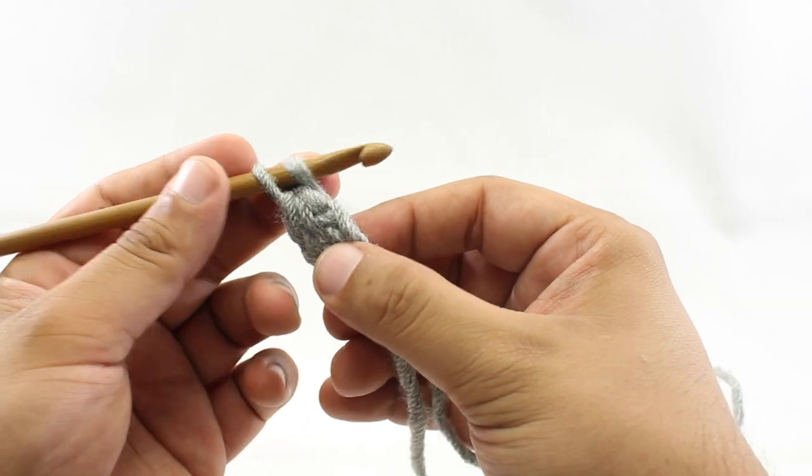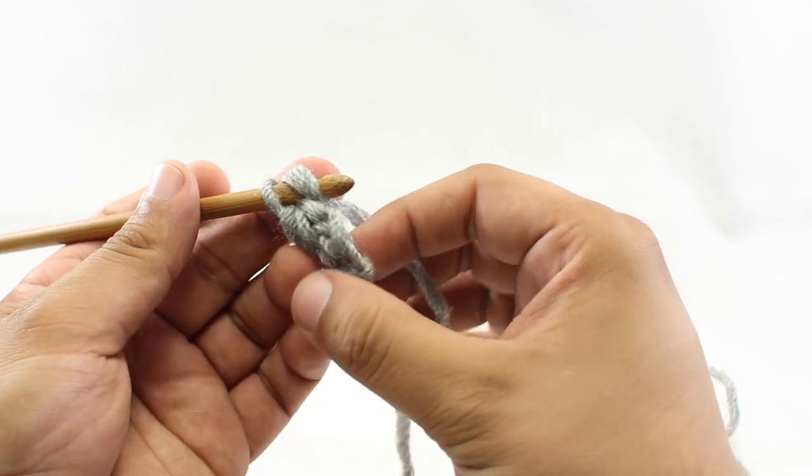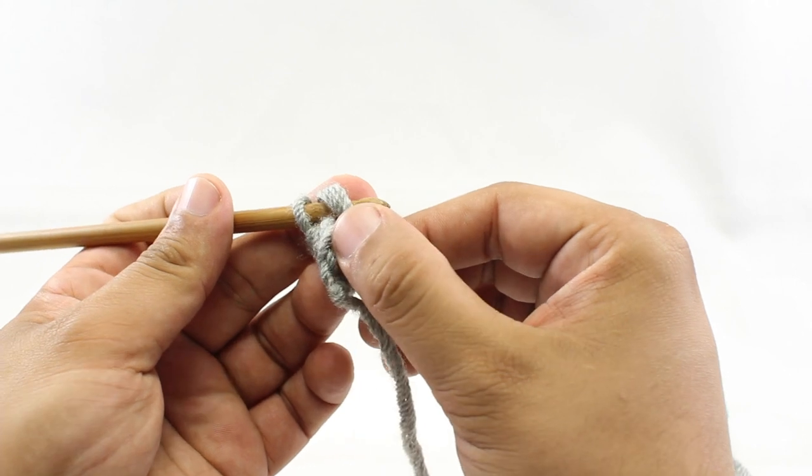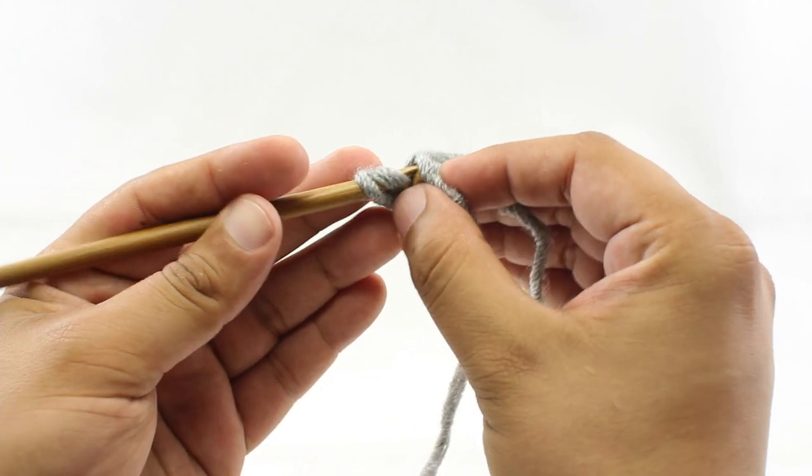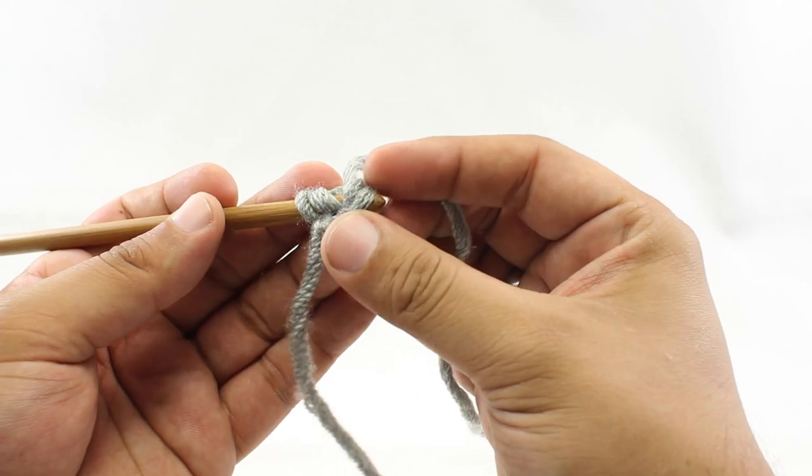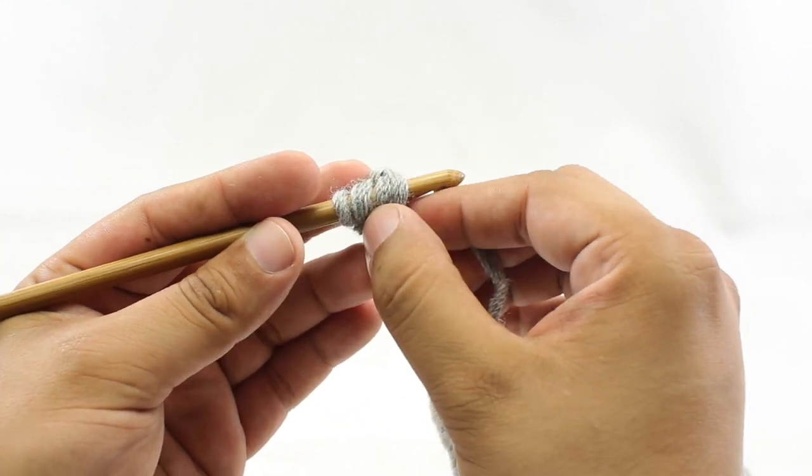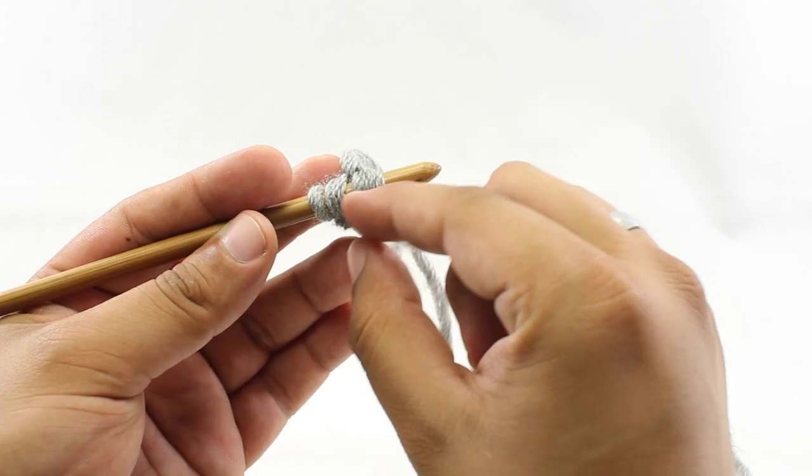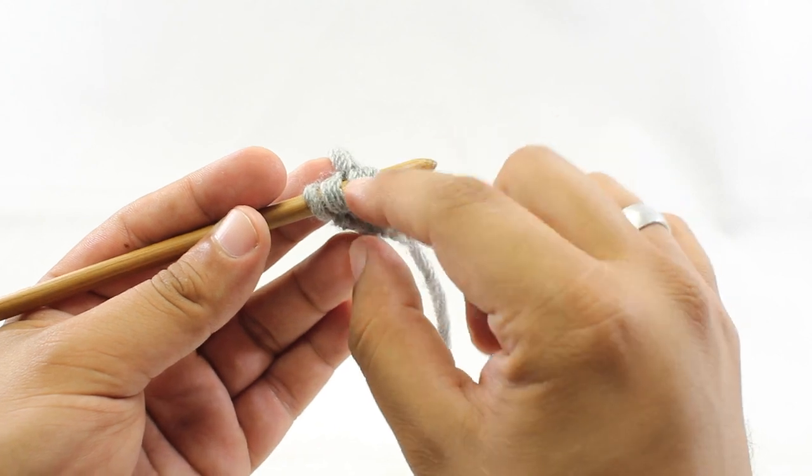So we'll yarn over and we're going to go into the bottom of the stitch that we just made. We can see the stitches right here. We're going to insert our hook into the stitch right underneath these two loops of the chain. So we can see we have kind of these two bars of fabric here. We want to make sure we pick up both of those.